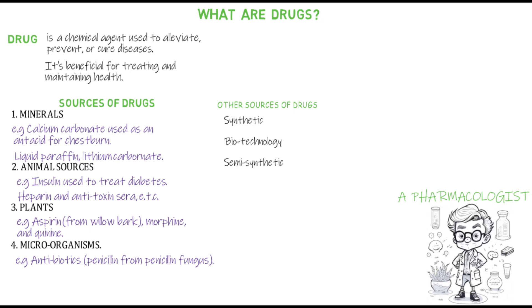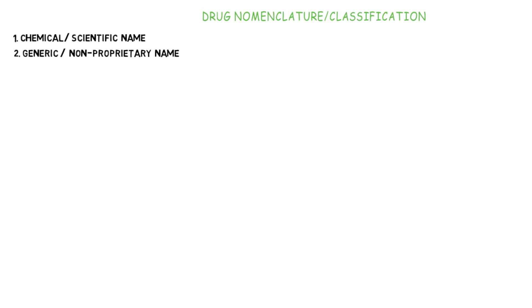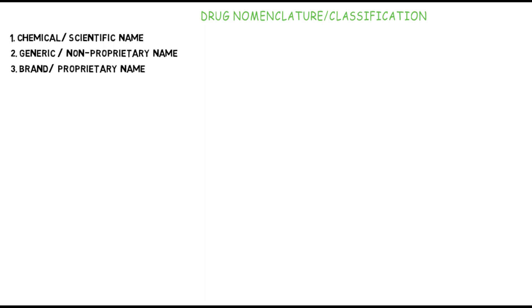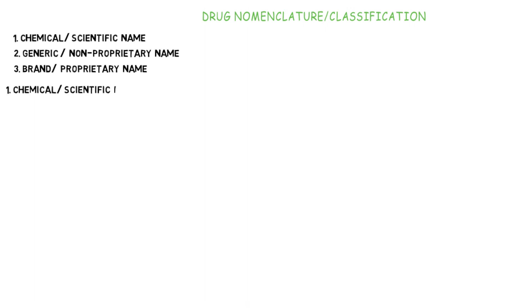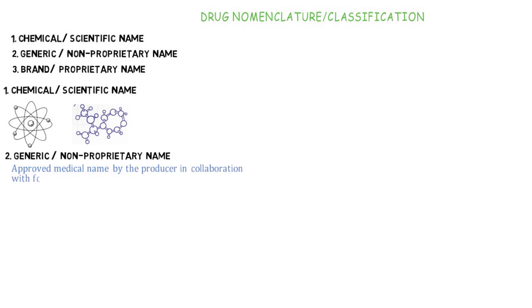The process of naming drugs for easy identification is known as drug nomenclature or classification. All drugs have at least three names: the first is the chemical or scientific name, the second is the generic or non-proprietary name, and the third is the brand or proprietary name. The chemical or scientific name describes the drug's molecular structure in terms of atoms and molecules, accompanied by its chemical structure. The generic or non-proprietary name is the approved medical name given by the producer in collaboration with the Food and Drugs Nomenclature Committee.